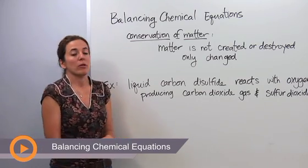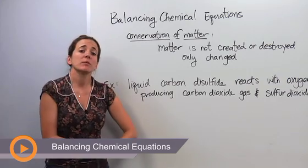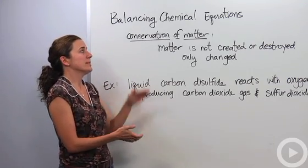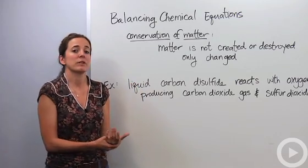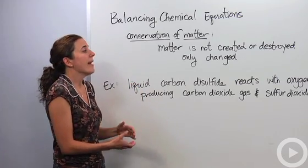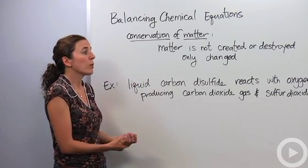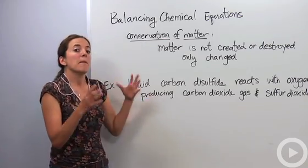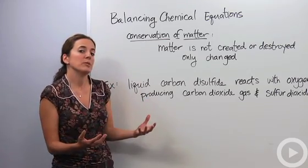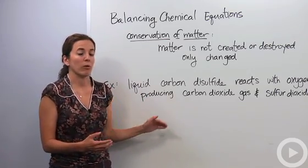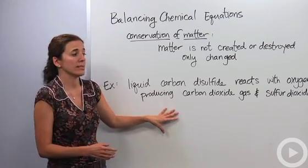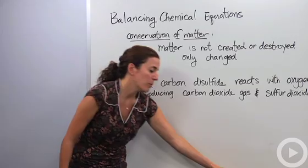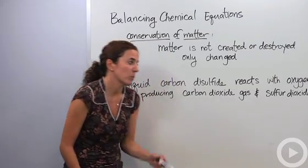Let's talk about the balancing of chemical equations. When dealing with chemical equations and balancing them, we have to adhere to a simple rule: conservation of matter, also known as conservation of mass. Matter is not created or destroyed, it's only changed. So we want to make sure we don't magically make up new elements. Whatever we have on the reactive side must equal the number of particles on the product side.